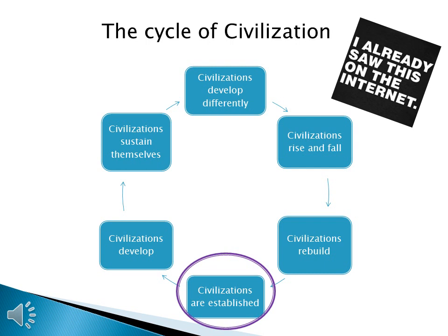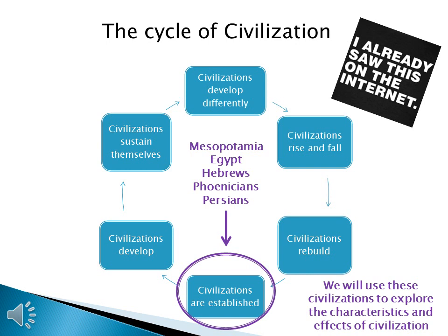We are going to look at five civilizations to understand this concept: Mesopotamia, Egypt, the Hebrews, the Phoenicians, and the Persians. We will look at these places to explore both the characteristics and the effects of civilization, which you learned last class.